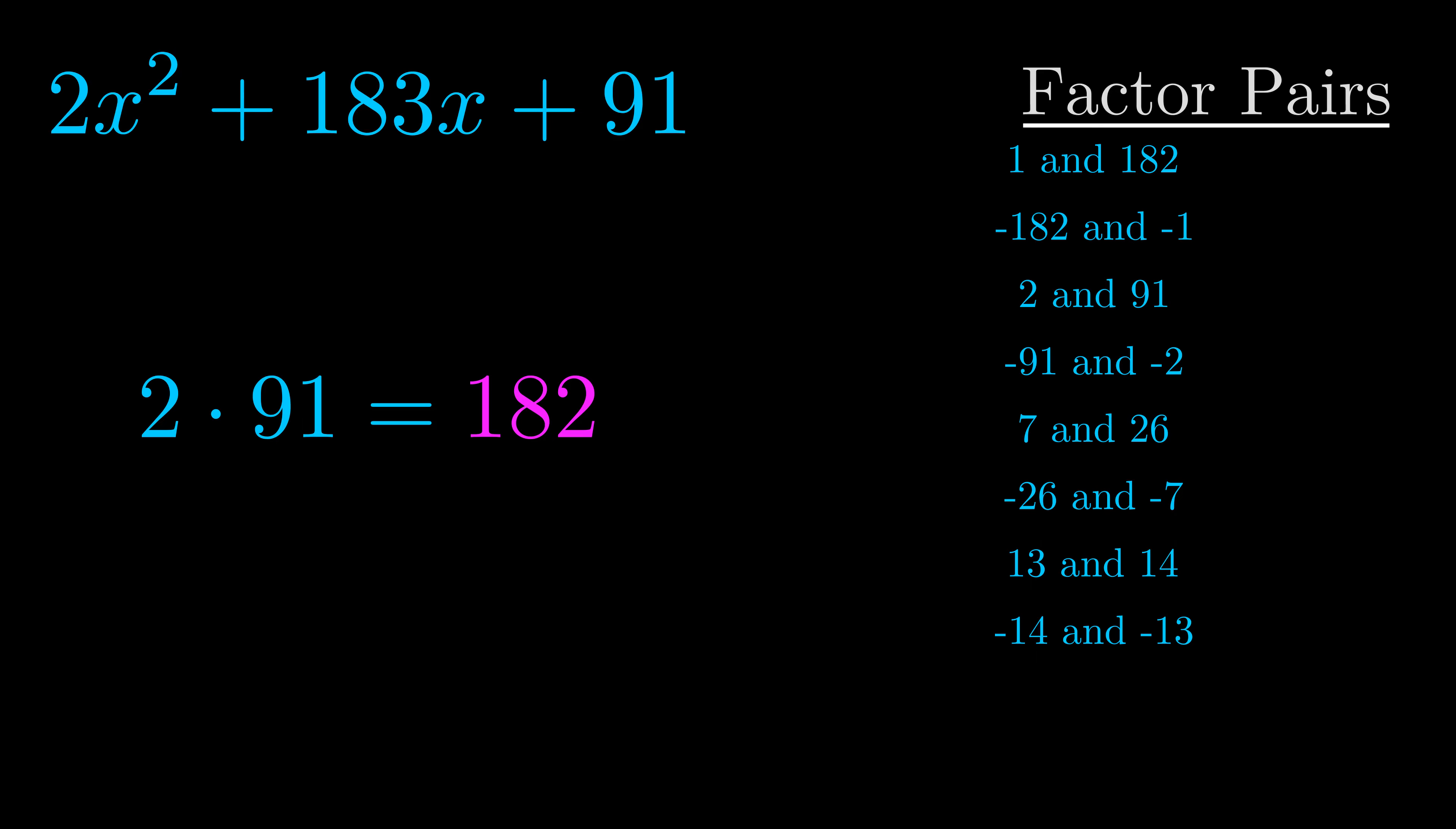The b value is the coefficient on the x term. That's the middle term, the one that we haven't done anything with yet. And really this is the only factor pair that we need.